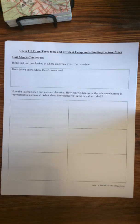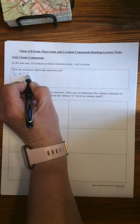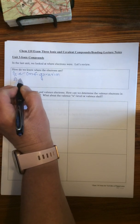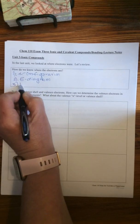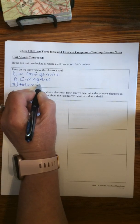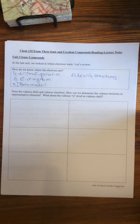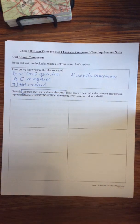In the last unit, we talked about where the electrons are. As a reminder, how do we know where the electrons are? We can have an electron configuration, an energy diagram, a Bohr model, or Lewis dot structures. All of those are showing us the ones that are in the valence shell and therefore the valence electrons.